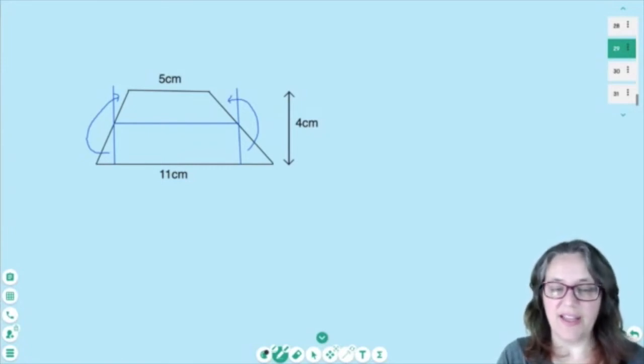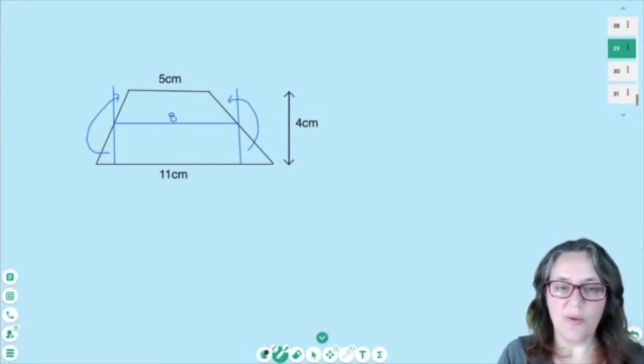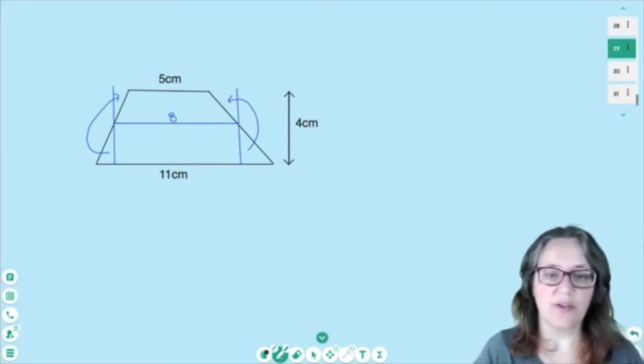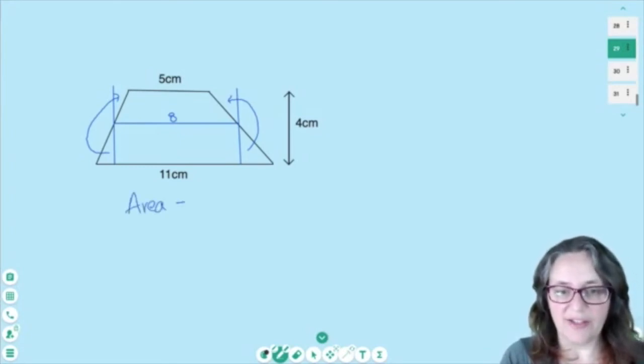So if I do it that way, 11 add 5 is 16, half of that is 8. So I want to find the area of a rectangle that is 8 cm across with a height of 4 cm. So that means my area is just going to be 8 times 4, which is 32 cm squared.